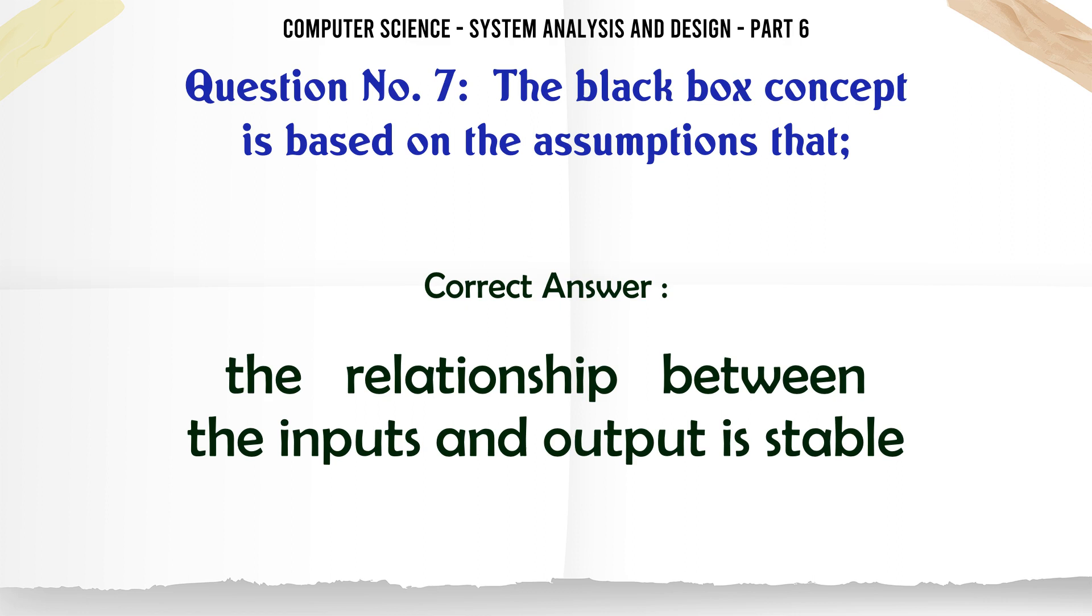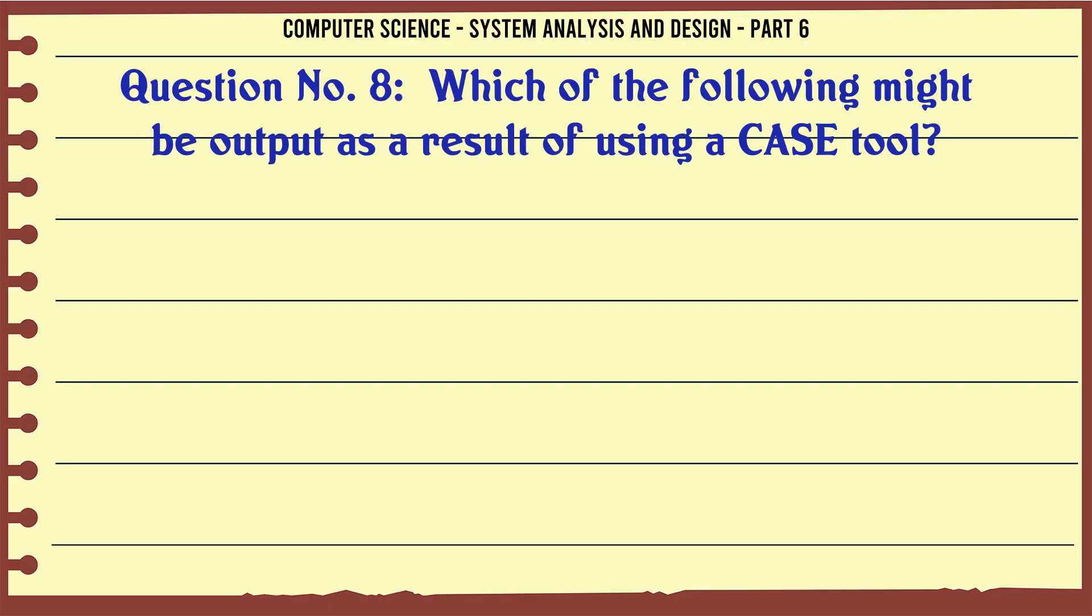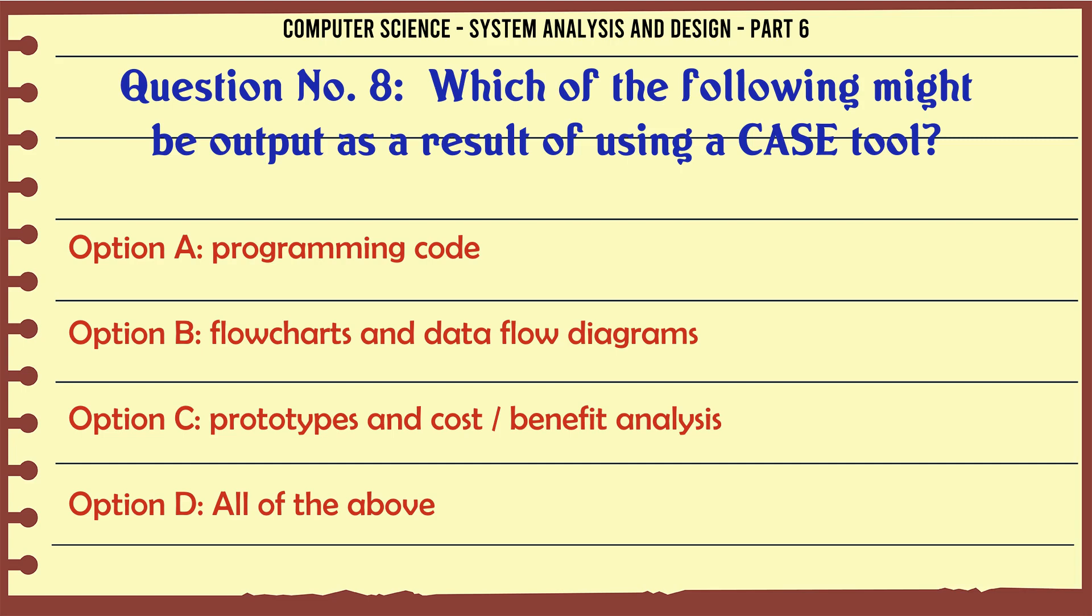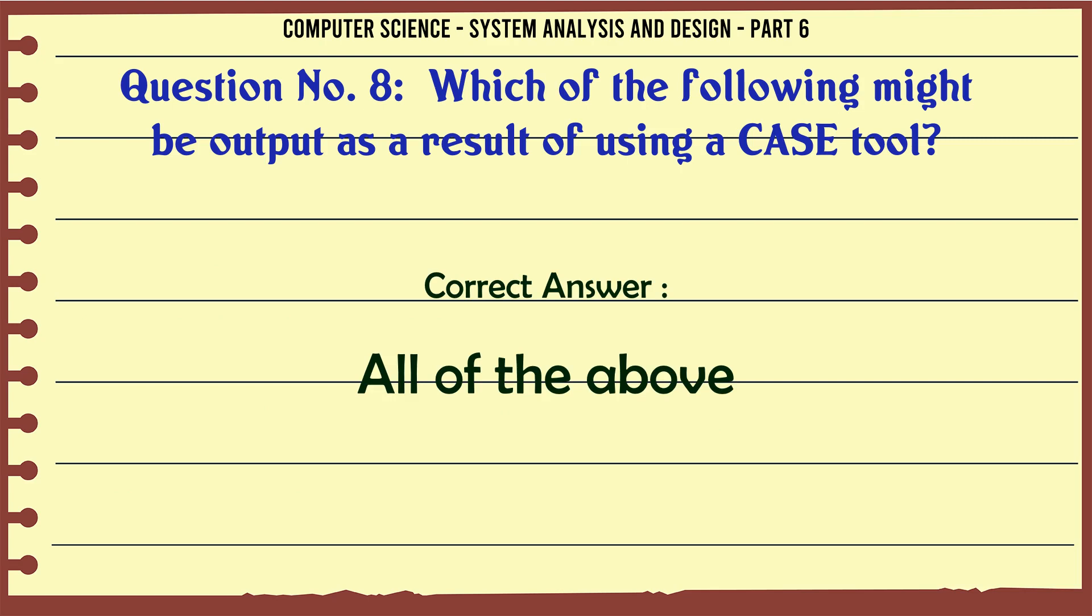Which of the following might be output as a result of using a case tool? A. Programming code, B. Flow charts and data flow diagrams, C. Prototypes and cost-benefit analysis, D. All of the above. The correct answer is: All of the above.